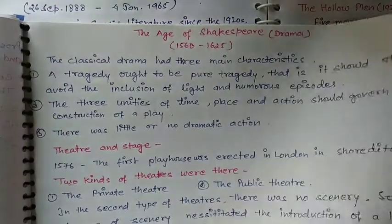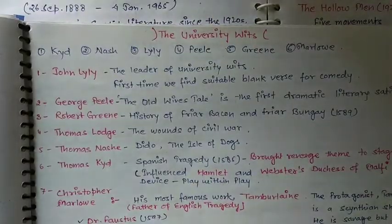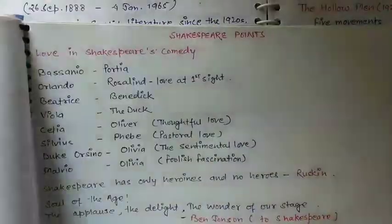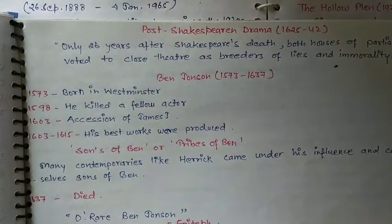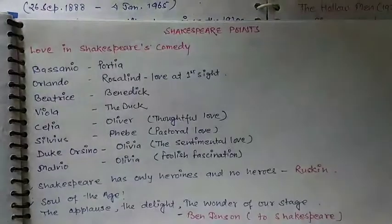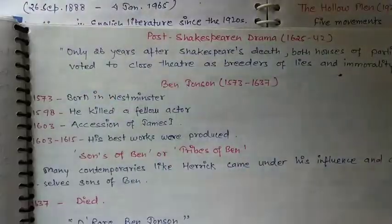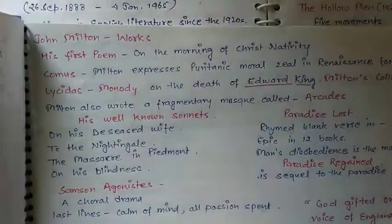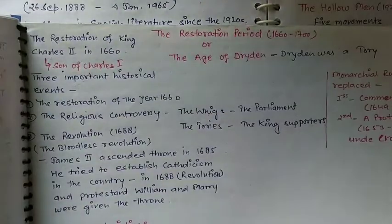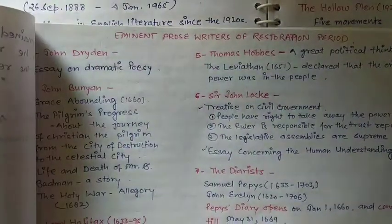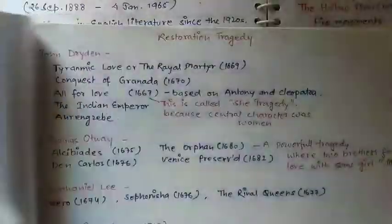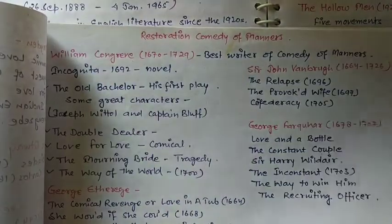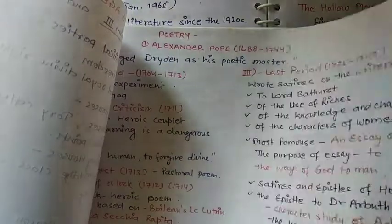Prose, Ben Jonson, literary criticism of the age, the essays of Shakespeare's era, University Wits — all these are covered. Then Shakespeare and all his works are here. After Shakespeare, you can see his important points on drama. Some words on Ben Jonson, John Webster, and John Milton are in the age section. Metaphysical poetry is covered in detail, followed by the Restoration period and Dryden, with eminent prose writers of the Restoration period.